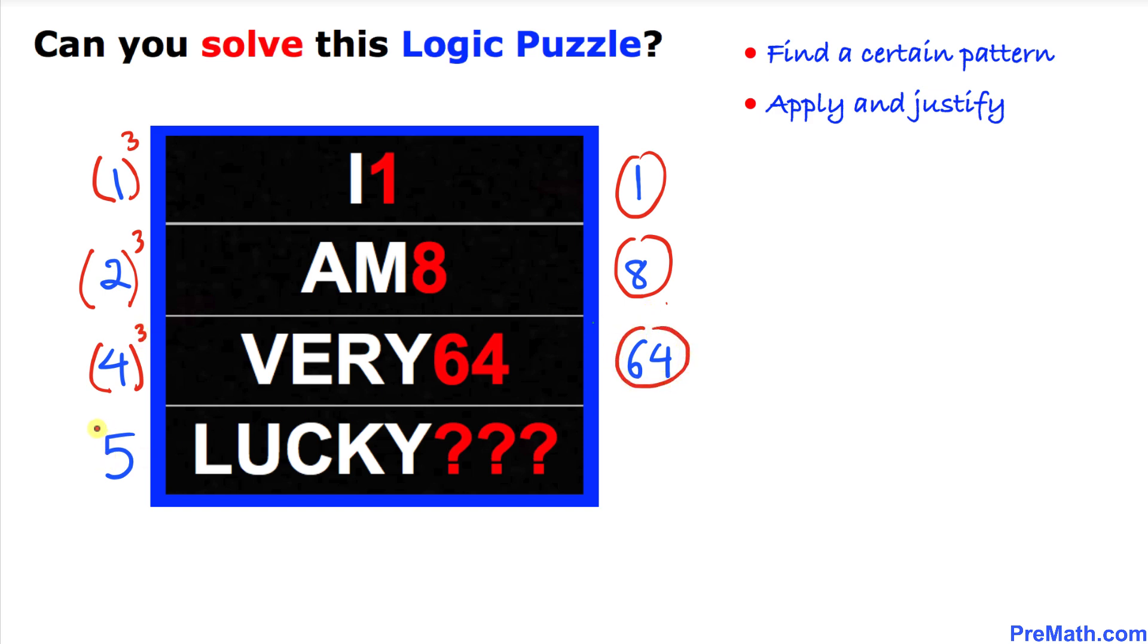Likewise, five power three is five times five times five, which gives us 125. So therefore the number that is going to be over here is 125.